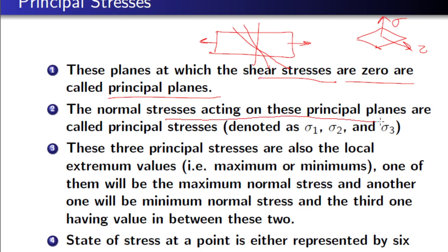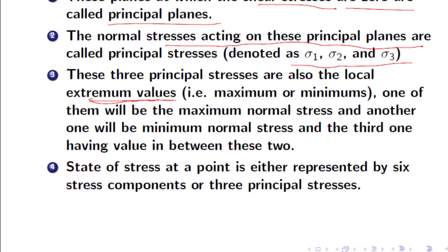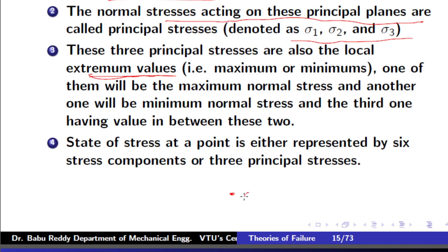The normal stresses acting on these principal planes are called principal stresses, denoted by sigma 1, sigma 2, and sigma 3. These are also known as extremum values — that is, the maximum or minimum values at a point. There will be three principal stresses at a given point. There are two ways of representing stress at a point: either all six components, or only three principal stresses. Both represent the stress at a particular point completely.